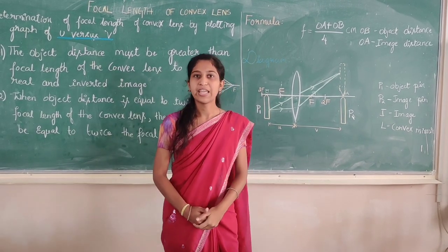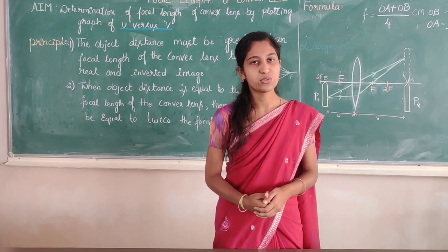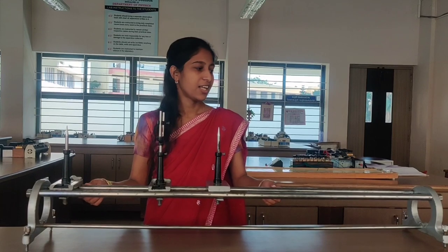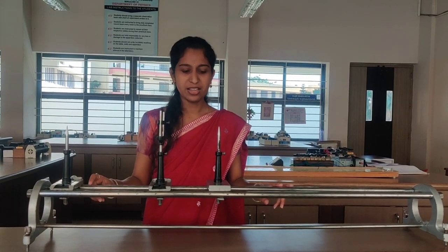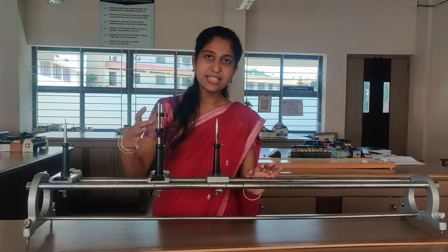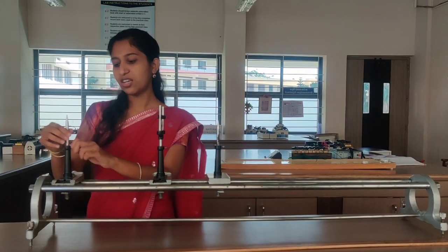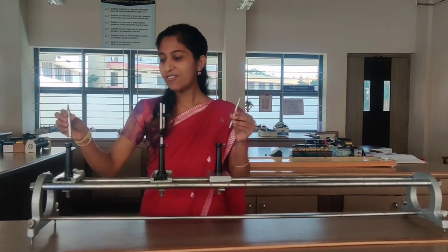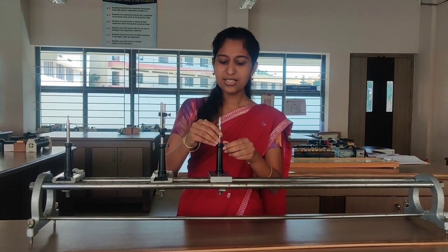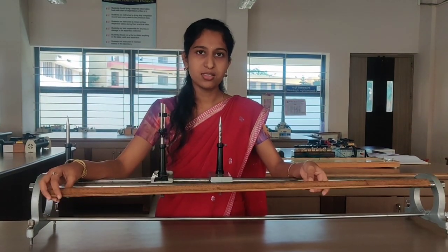As we studied the aim, principle, formula, and diagram, let us look into the apparatus we are using in this experiment. This is the apparatus for the convex lens experiment. As you can see, this is the optical bench, and we have a lens stand where we are going to place the convex lens. We are using two pins — one as object pin P1 and the other as image pin P2. For noting down the readings, we are using a centimetre scale.